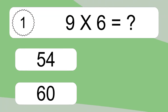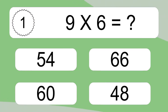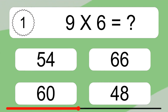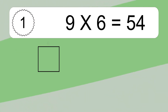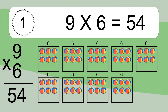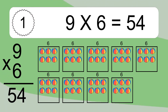Nine times six equals what? Nine times six equals 54. We have nine boxes and each box has six colorful balls inside. If you count all the balls in all the boxes together, you will have nine times six balls. This equals 54 balls.